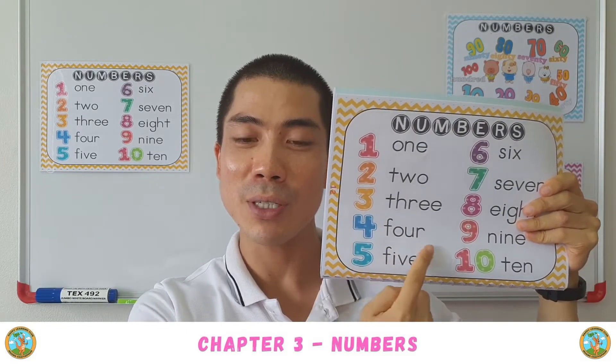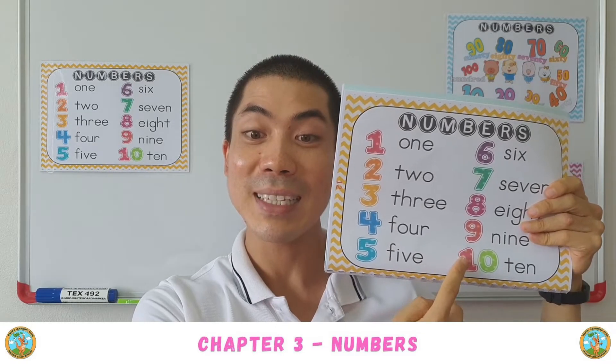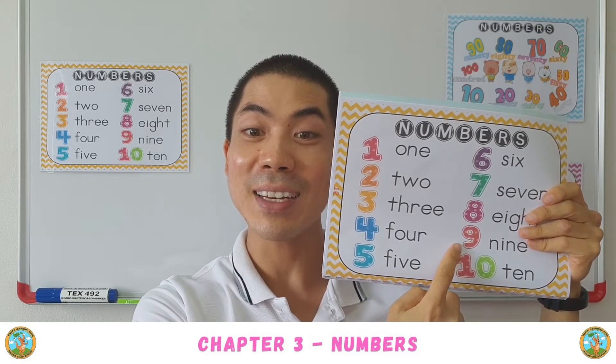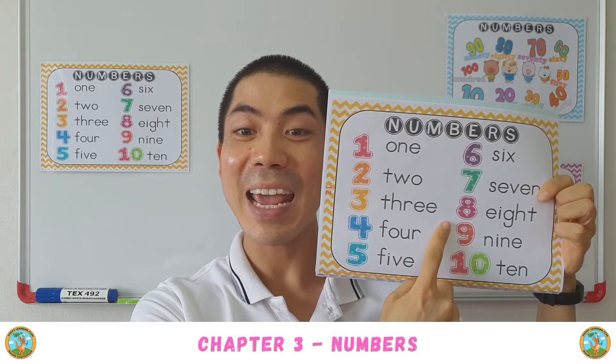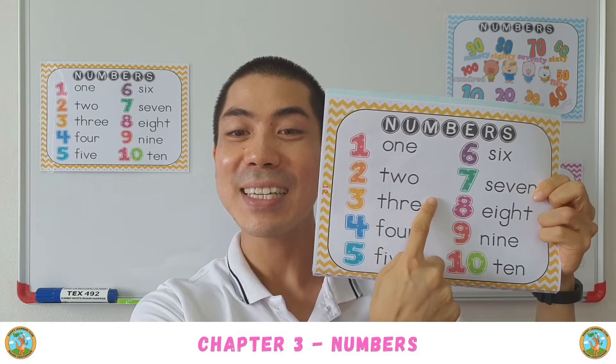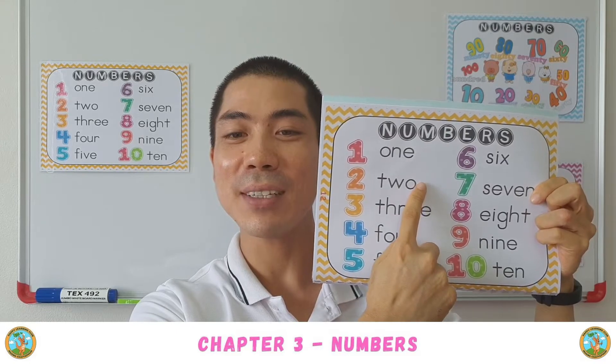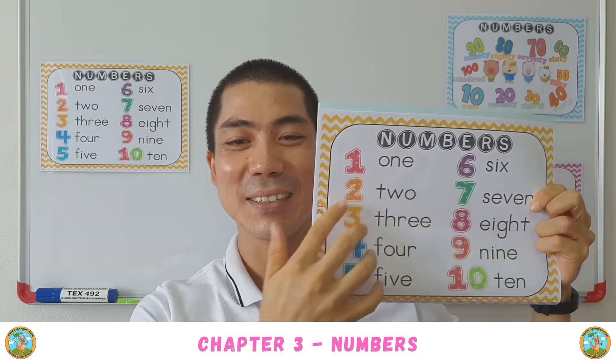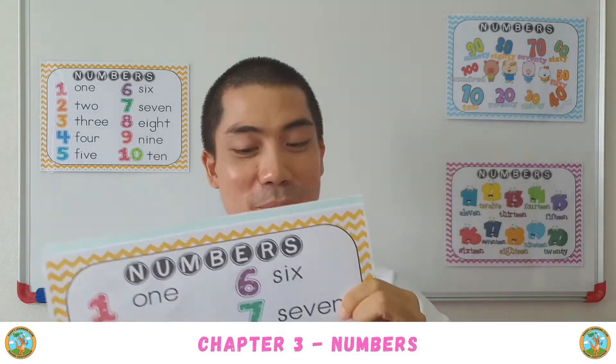Let's read it backwards: 10, 9, 8, 7, 6. Good.